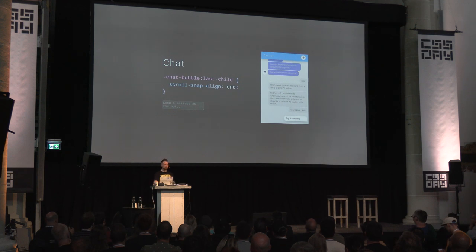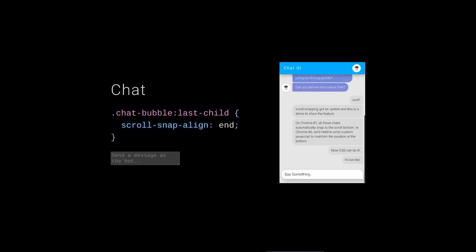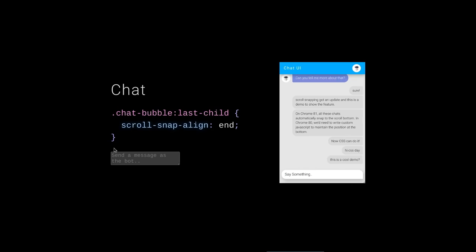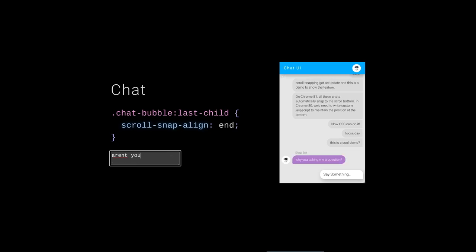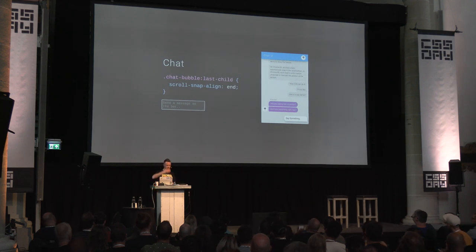Chat UI: remember the single-snap-point concept? We target the last child and tell it scroll-snap-align: end. As new messages are added and the height changes, it stays snapped at the bottom. This is a CSS-only solution to keep a chat UI snapped to the bottom. This was actually one of the main reasons snap-after-layout was added to the spec — so you can adjust items inside a scroller and maintain the desired snap child position.